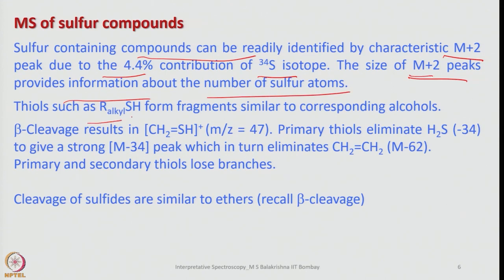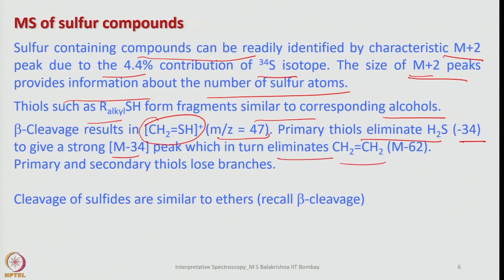Thiols such as alkyl-SH form fragments similar to corresponding alcohols — the fragmentation is very similar to alkyl alcohols. Beta cleavage results in elimination of a cation with m/z = 47. Primary thiols also eliminate H₂S to give a strong M−34 peak, which in turn eliminates ethylene. Primary and secondary thiols readily lose branches if present, and cleavage of sulphides is very similar to beta cleavage in ethers.